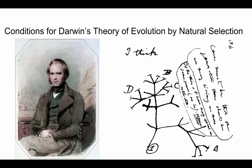Hi everybody, this is Mr. Matthew and I'm here with the second video in our evolution series. This video is called Conditions for Darwin's Theory of Evolution by Natural Selection. We have a nice picture of the young Charles Darwin here on the left and his famous initial sketchings of the tree with the words 'I think' there. In this one, I'm going to highlight some of the conditions that are associated with evolution by natural selection.